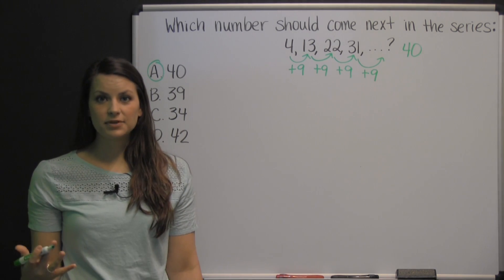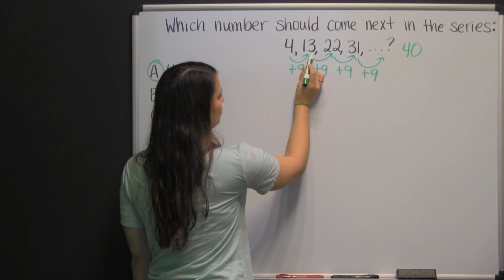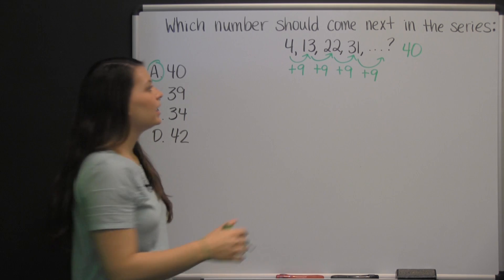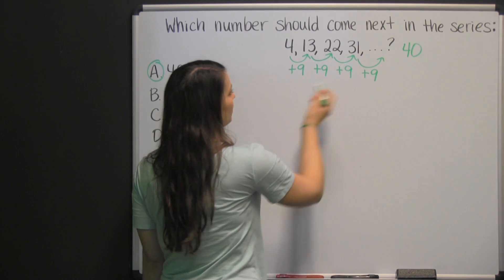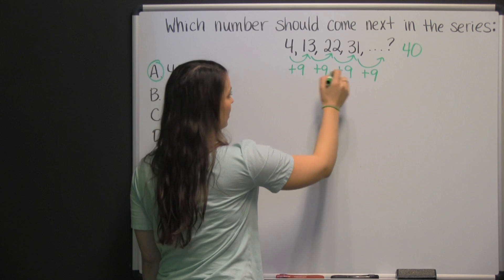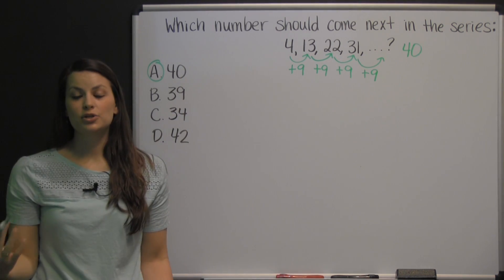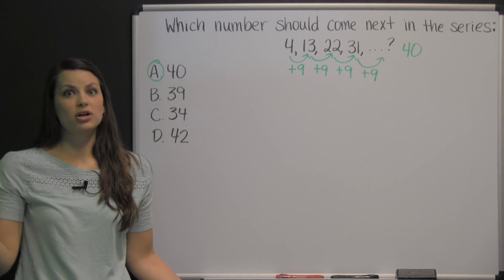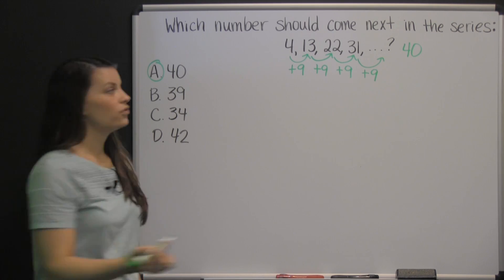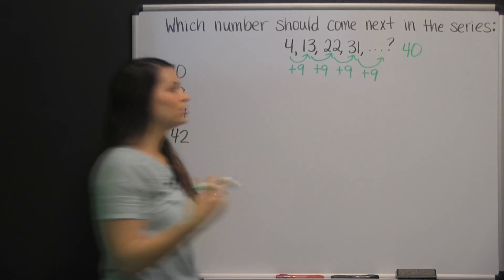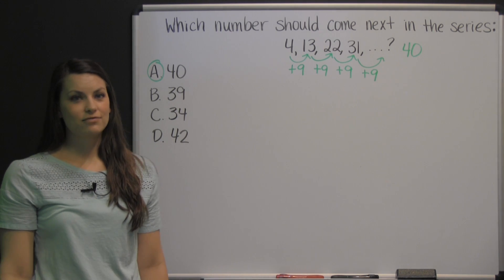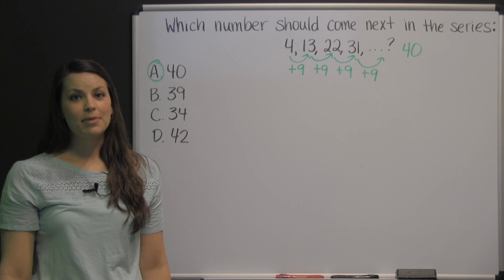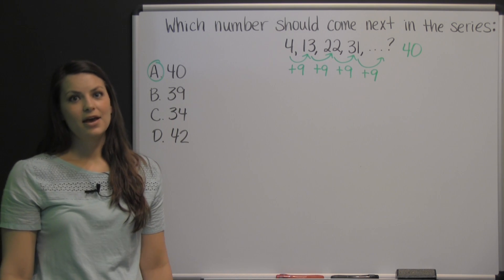Something to be careful with on these types of problems is sometimes you'll look at just the first two numbers and see, oh well, it's just four plus nine to get thirteen. But it may not be that you're adding nine each time. They could add nine, then ten, then eleven, then next you would be adding twelve. Or, adding nine could possibly be not even part of the pattern at all. That's why it's important to check all the way through the numbers you're given to make sure that you have the pattern right.